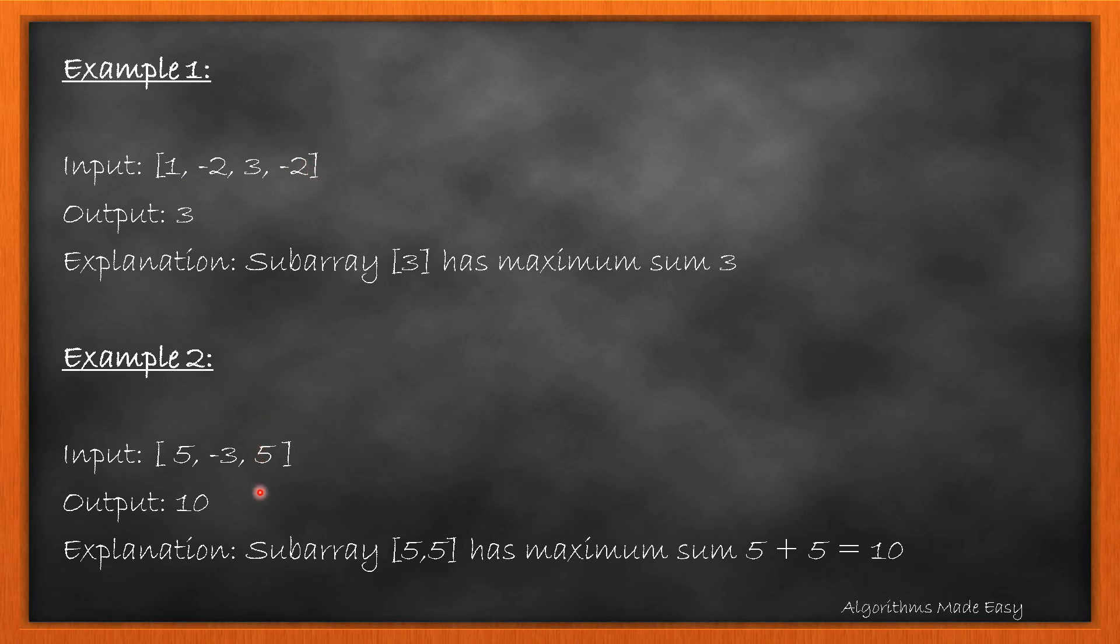In the second example, maximum subarray is formed by joining the last element to the first element. So we add them both and return 10. This is our circular array case. We will discuss this in detail in a minute.